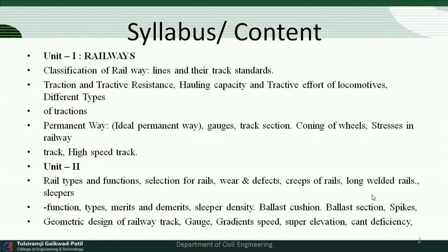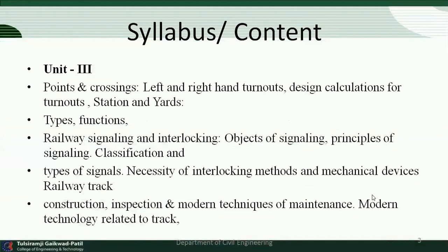In unit number two, it is also part of railway engineering, which includes the railway rail types and their functions, sleepers, types of sleepers, merits and demerits of sleepers, coning of wheels, and gradients — all these parts we are going to cover in unit number two.